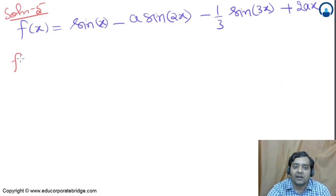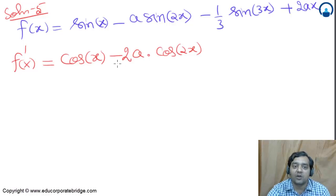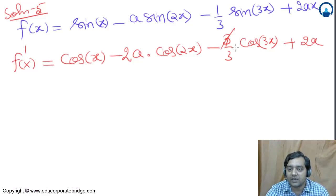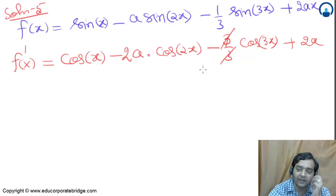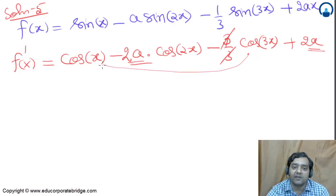We start by finding f'(x). f'(x) = cos x - 2a cos 2x - cos 3x + 2a. Grouping similar terms — those without a and those with a — we get f'(x) = (cos x - cos 3x) + 2a(1 - cos 2x).